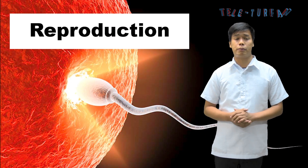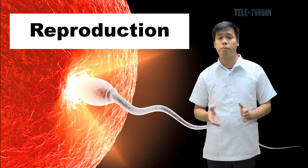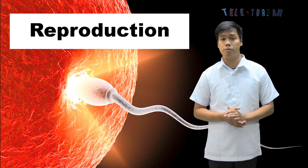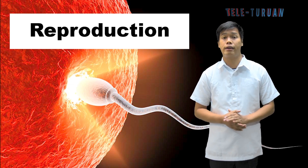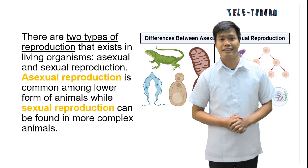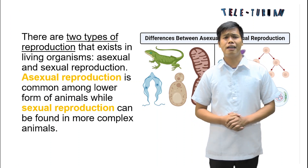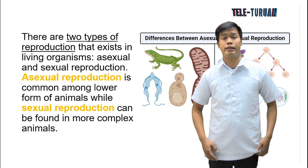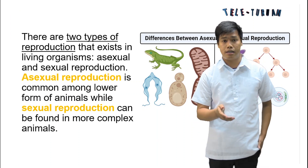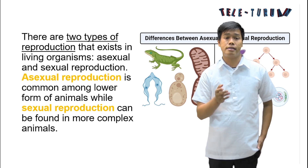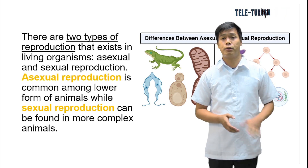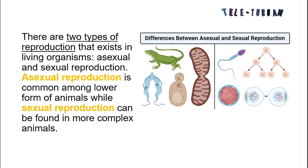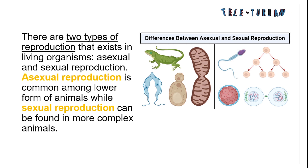Reproduction is the biological process by which new individual organism offspring are produced from their parents. There are two types of reproduction that exist in living organisms: asexual and sexual reproduction. Asexual reproduction is common among lower forms of animals while sexual reproduction can be found in more complex animals.